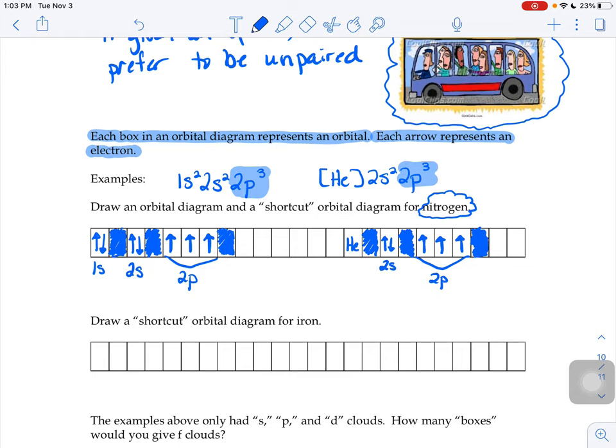What if we were doing an orbital diagram for iron, and it says to do just the shortcut way for iron?